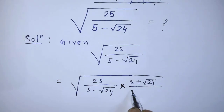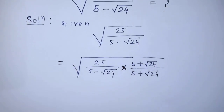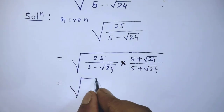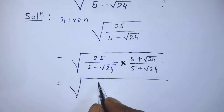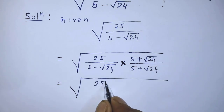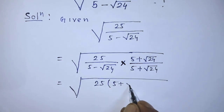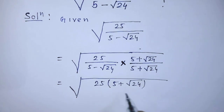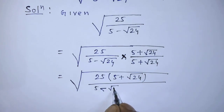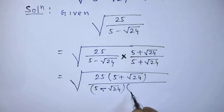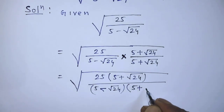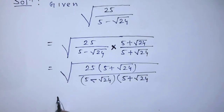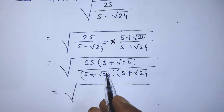So we write 5 plus square root of 24 over 5 plus square root of 24. This gives us the square root of the quantity: 25 times (5 plus square root of 24) over (5 minus square root of 24) times (5 plus square root of 24).